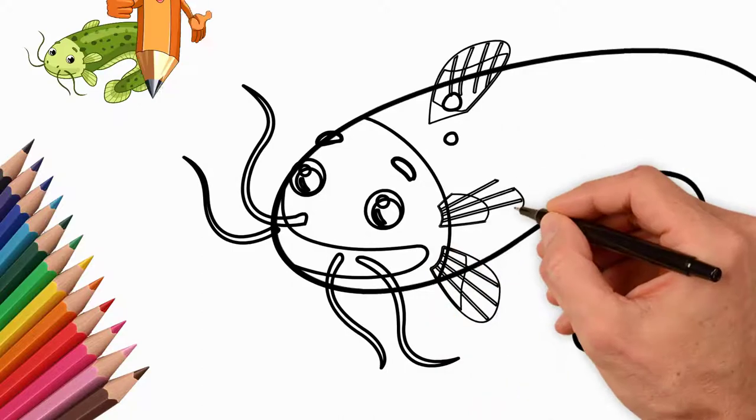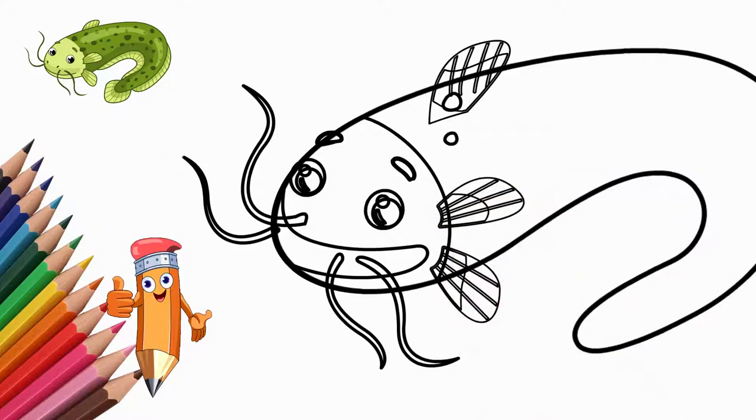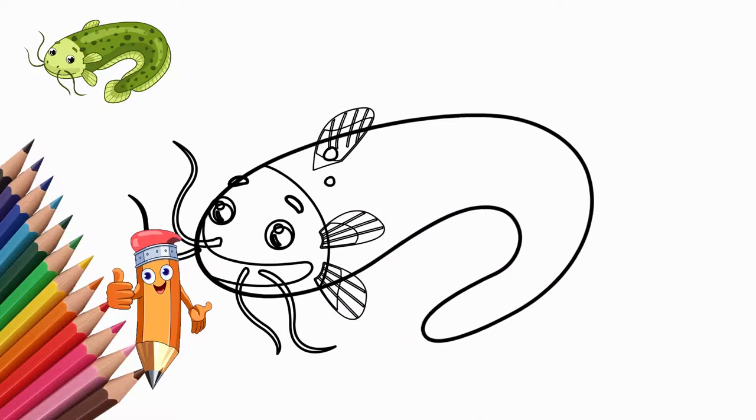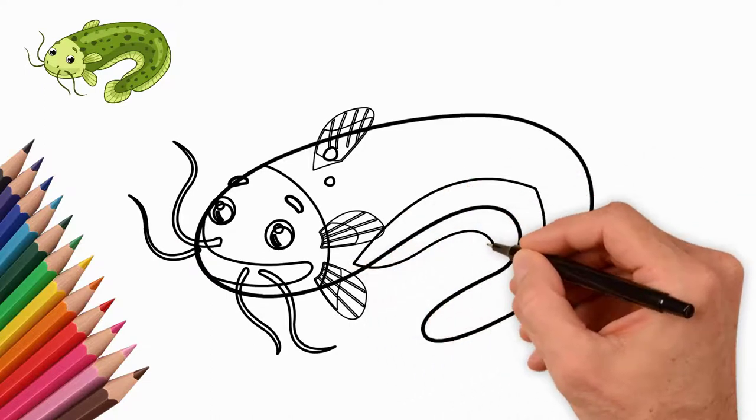Like all fins, it has bones. A little above it we draw another fin. Under the body draw another large fin.